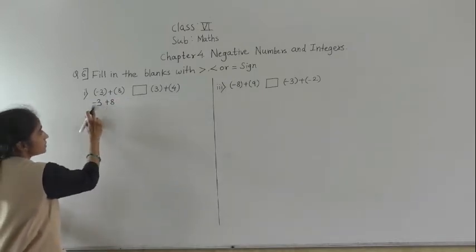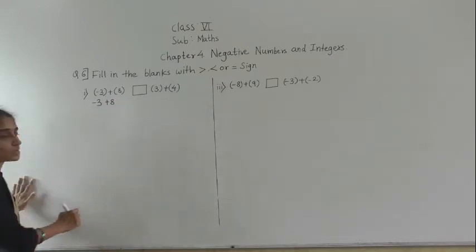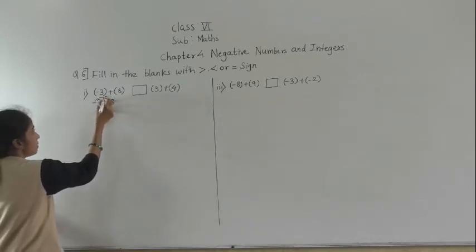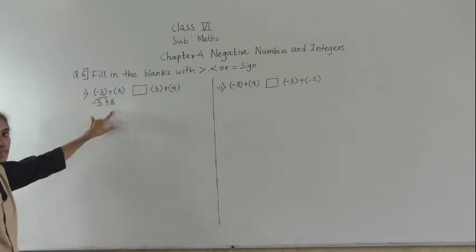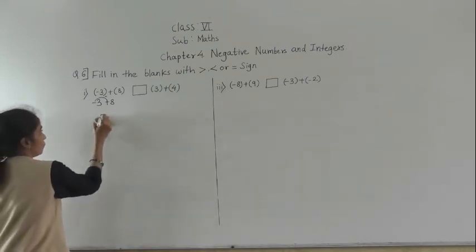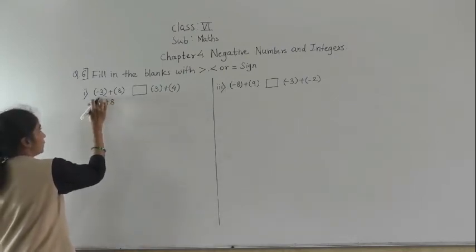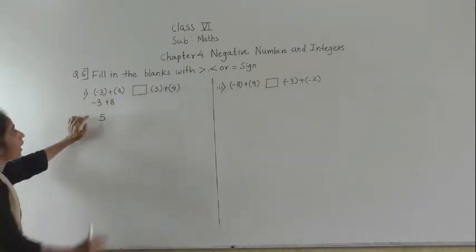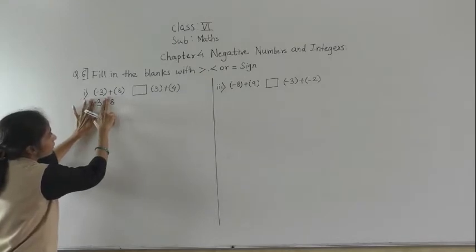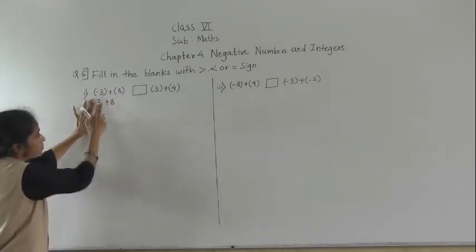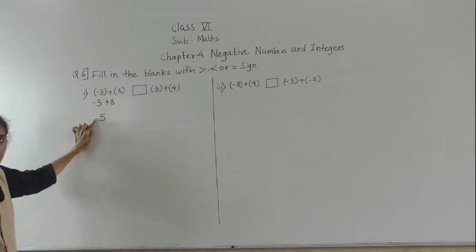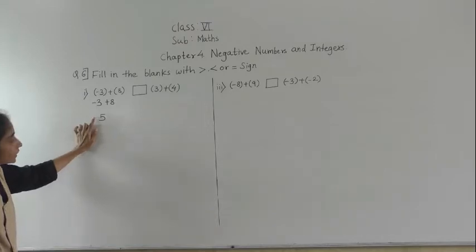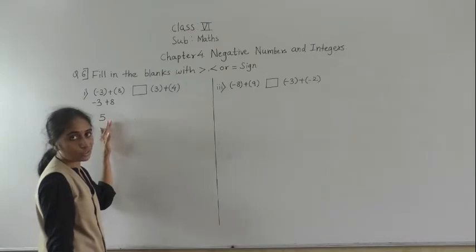Now we have minus plus minus 3 plus A. Minus plus minus gives minus plus. Practically, from A we subtract to get the result. We got 5. The greater number is 8, which has a positive sign, so the answer is positive 5. You can write plus 5 or just 5 — both are the same.